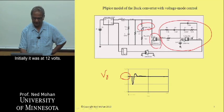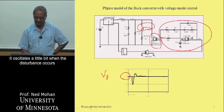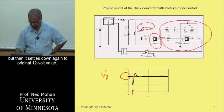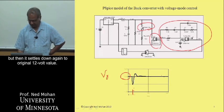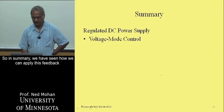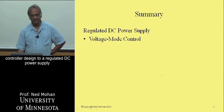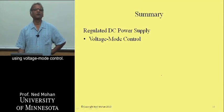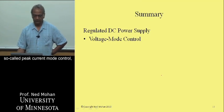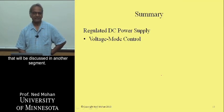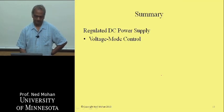Initially the output was at 12 volts. It oscillates a little when the disturbance occurs, but then settles back down to the original 12-volt value. In summary, we have seen how to apply feedback controller design to a regulated DC power supply using voltage mode control. There is another type of control — so-called peak current mode control — that will be discussed in another segment.